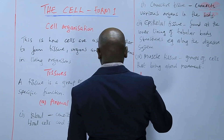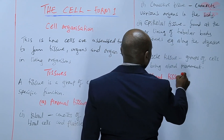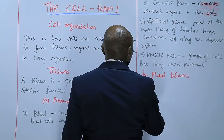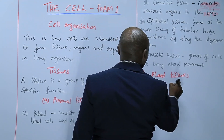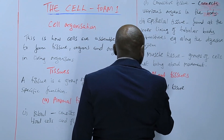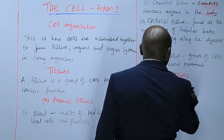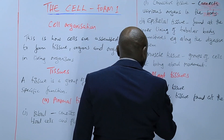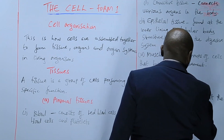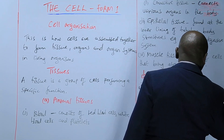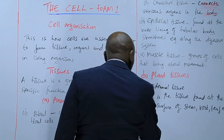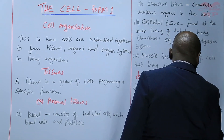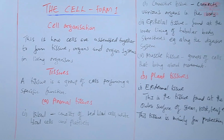Let's go through various examples of plant tissues. Plant tissues include epidermal tissue, which is found at the outer surface of the stem, root, leaf, etc. This tissue is mainly for protection.